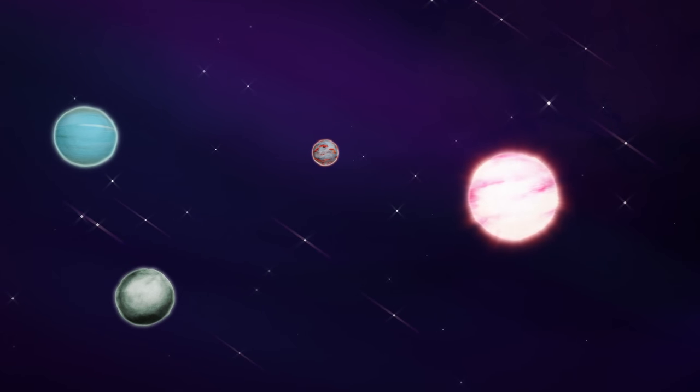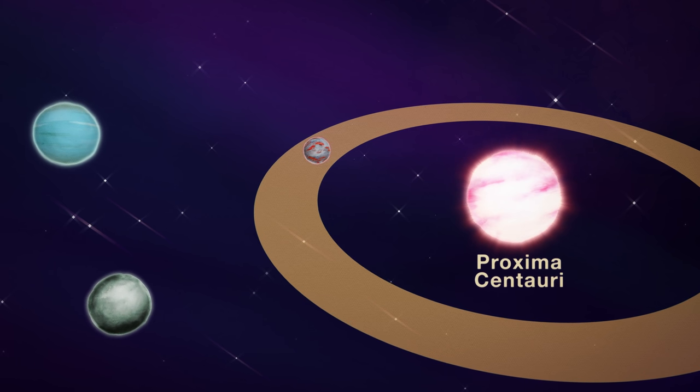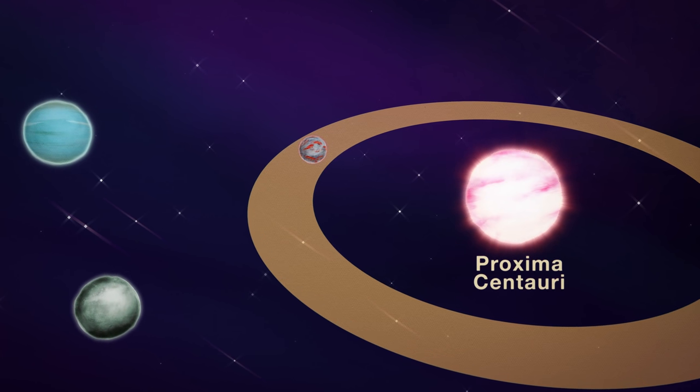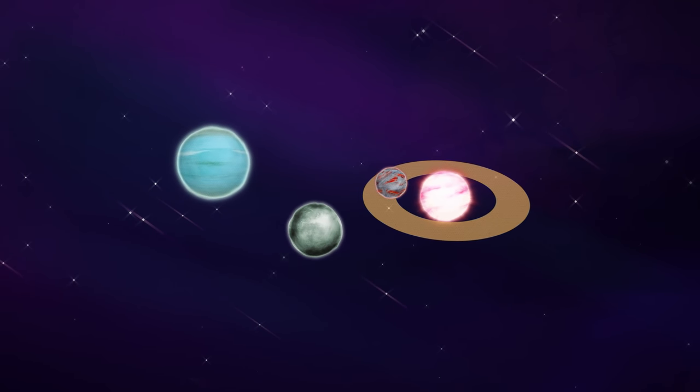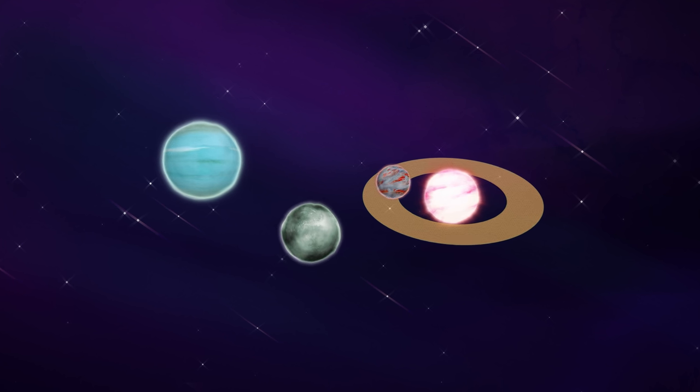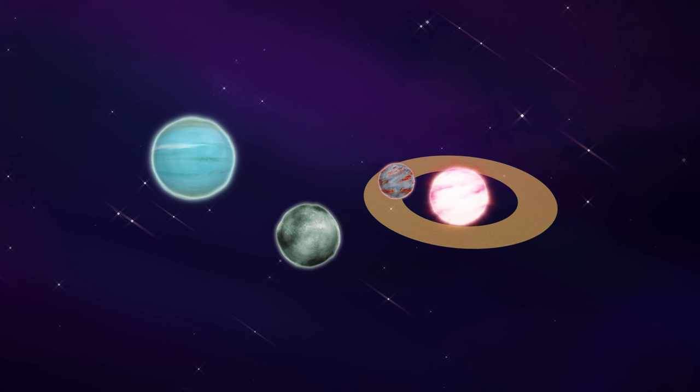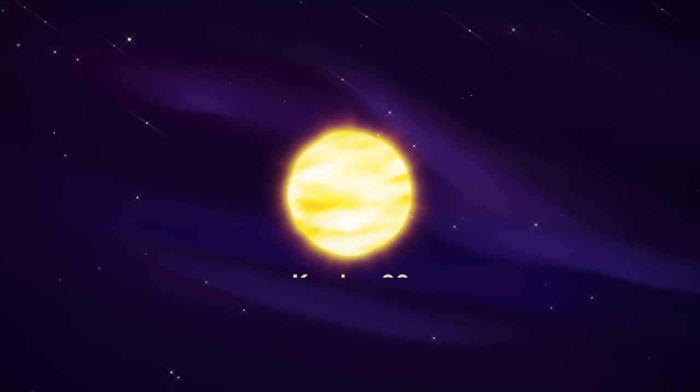The location of the habitable zone depends on how big and bright a star is. The nearest star to our sun, Proxima Centauri, has at least one planet in the habitable zone. But because Proxima is much smaller and dimmer than our sun, its habitable zone is way smaller and closer to the star. So, every star has a habitable zone, but that doesn't mean there will be planets there.